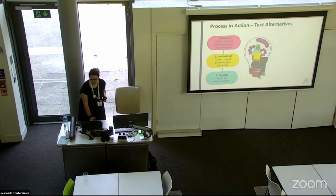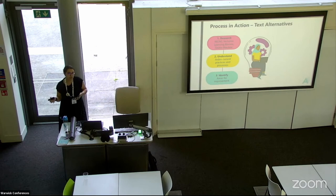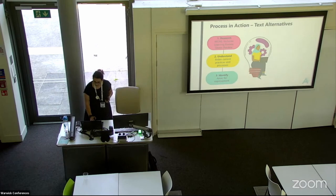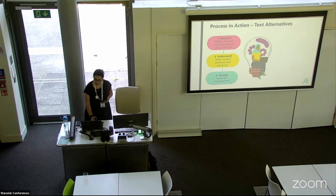Number three is identify — identifying areas for improvement in the processes and highlighting areas of good practice to continue. This could be noting that there's not currently a space to put something in and creating that space. It could also be a chance to speak to a student panel. We've got a student inclusion panel that's been newly created, to get their lived experience and find out if what you're doing is actually working for them.